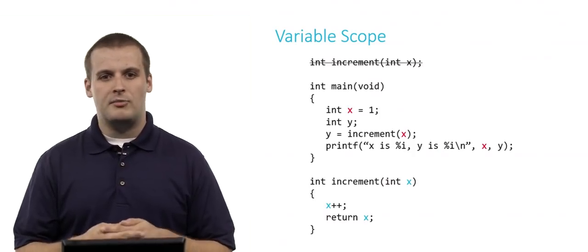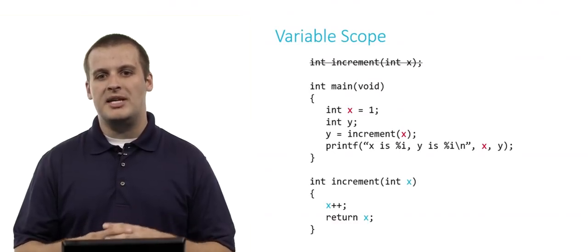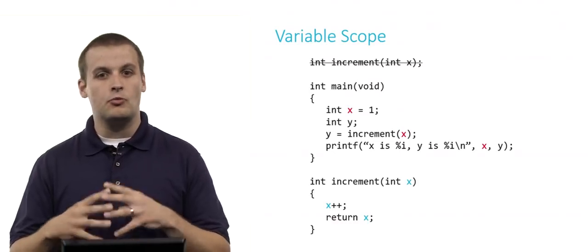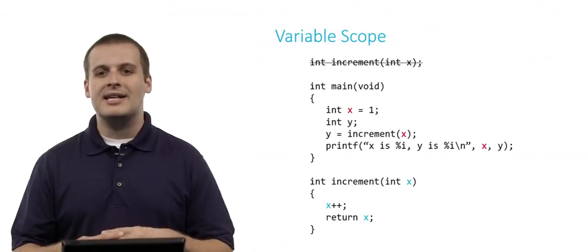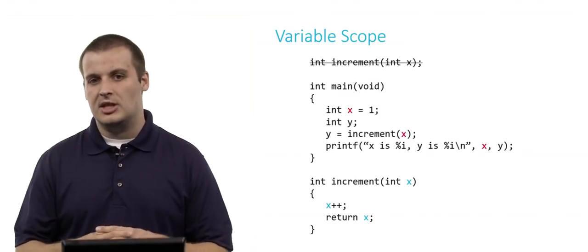Notice in that third line of main, y equals increment x, that increment is not being passed main's x or the red x. It's getting passed a copy of it. And it's only going to work with that copy of it, the blue x.